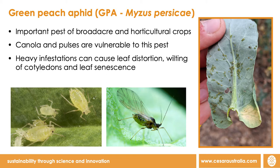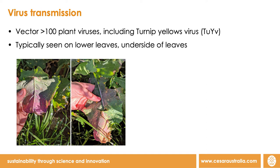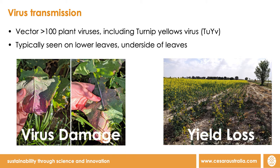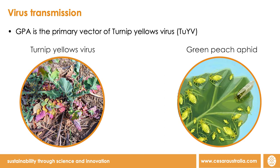However, the biggest risk posed by GPA is virus transmission. GPA is a vector of over 100 different plant viruses, including turnip yellows virus, formerly known as beet western yellows virus, which infects canola and other brassica crops. Early infection of plants can lead to yield losses of up to 40% and a reduction in oil quality. GPA is the primary vector of turnip yellows virus with a 96% transmission rate, and so control of this pest is an important priority for the grains industry.